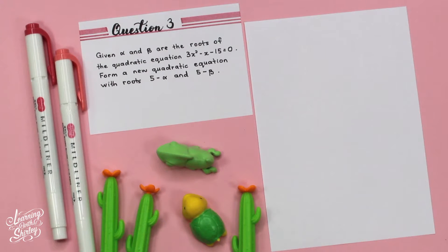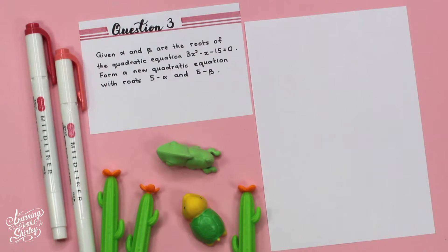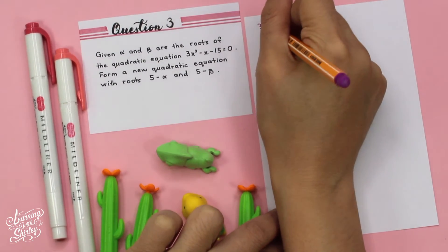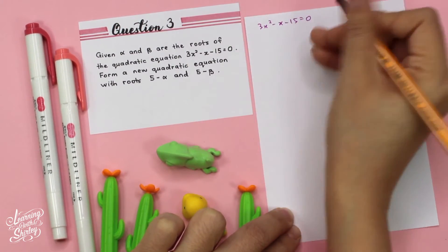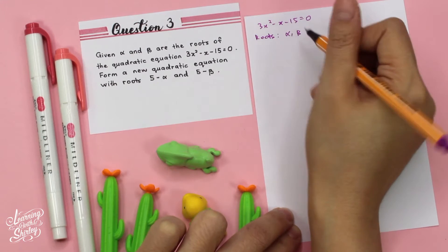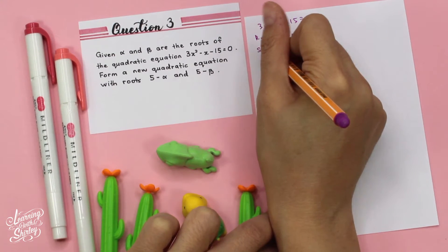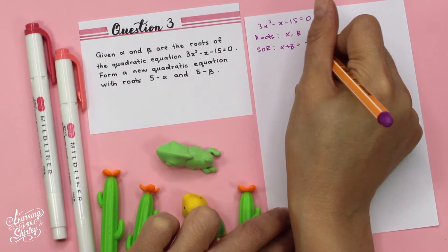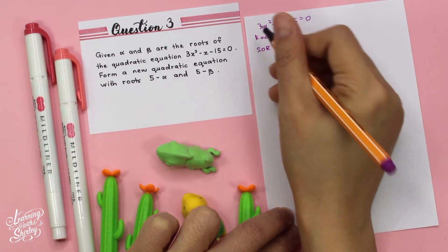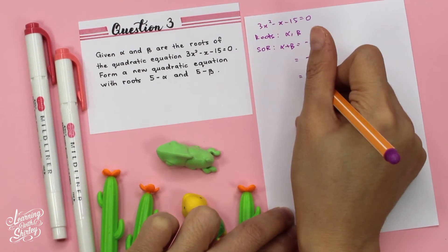For question 3, given alpha and beta are the roots of the quadratic equation 3x² minus x minus 15 equals 0, form a new quadratic equation with roots 5 minus alpha and 5 minus beta. From the given equation, the SOR is alpha plus beta equals negative b over a. b is negative 1 and a is 3, so alpha plus beta equals 1 over 3. The POR is alpha times beta equals c over a: c is negative 15 and a is 3, so alpha beta equals negative 5.